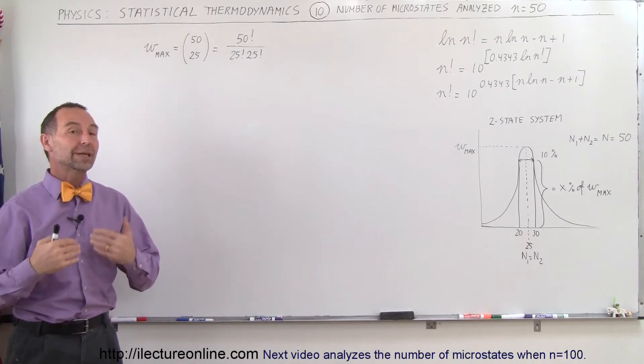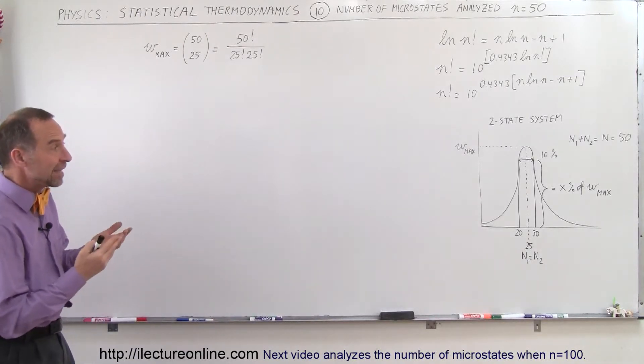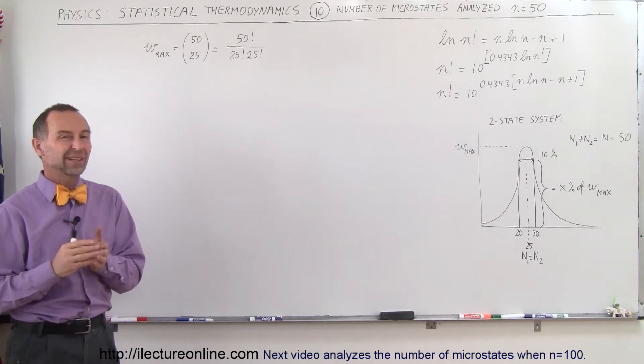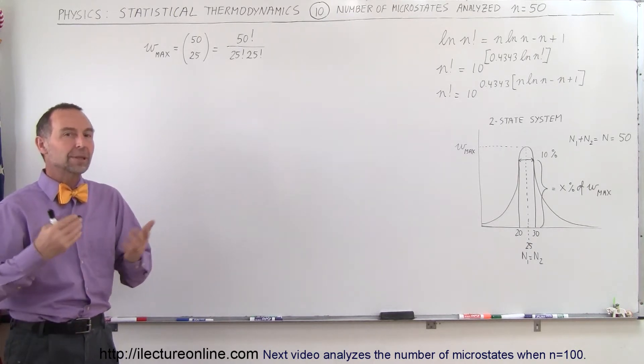Welcome to ElectronLine, and now we're going to do a case where we have a population of 50. Again, it's a two-state system. Let's say 50 coins that we can throw up in the air.